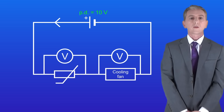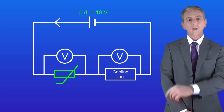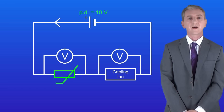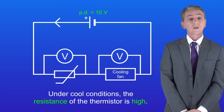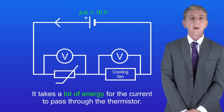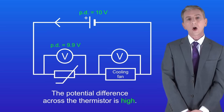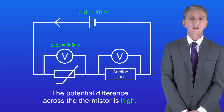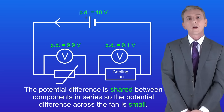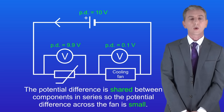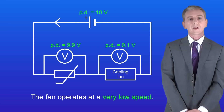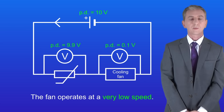In this circuit we've got a thermistor connected in series with a cooling fan. Under cool conditions, the resistance of the thermistor is high, meaning it takes a lot of energy for the current to pass through it. Because of that, the potential difference across the thermistor is high, and since potential difference is shared between components in series, the potential difference across the fan is small, so the fan operates at a very low speed.